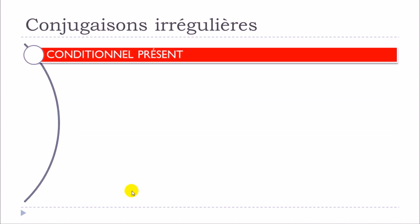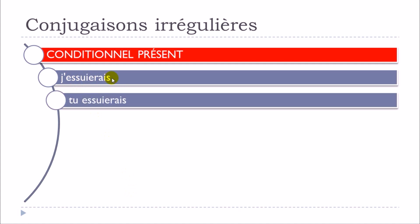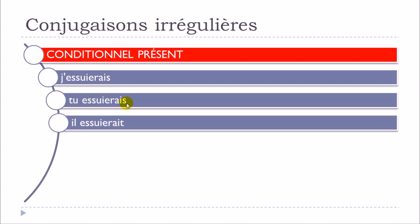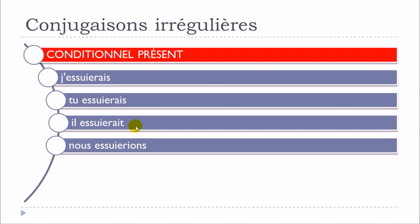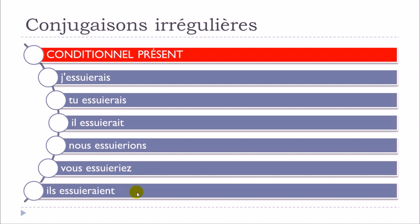Let's see now for the conditionnel présent. J'essuierais, tu essuierais, il essuierait, nous essuierions, vous essuieriez, ils essuieraient. It's exactly the same modification — this Y is changed and replaced by I — and it does affect all the persons.